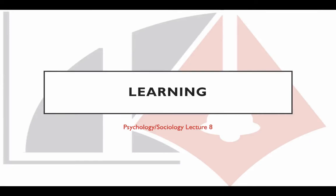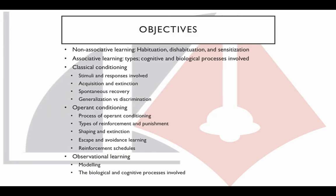In this eighth psychology sociology lecture, we're going to be talking all about learning. We'll talk about some forms of non-associative learning — habituation, dishabituation, and sensitization — and then different types of associative learning, including the processes involved. We'll dive into classical conditioning, also called Pavlovian conditioning, and operant conditioning, two topics which come up time and time again on the MCAT. We'll end with observational learning, the processes involved, and modeling.